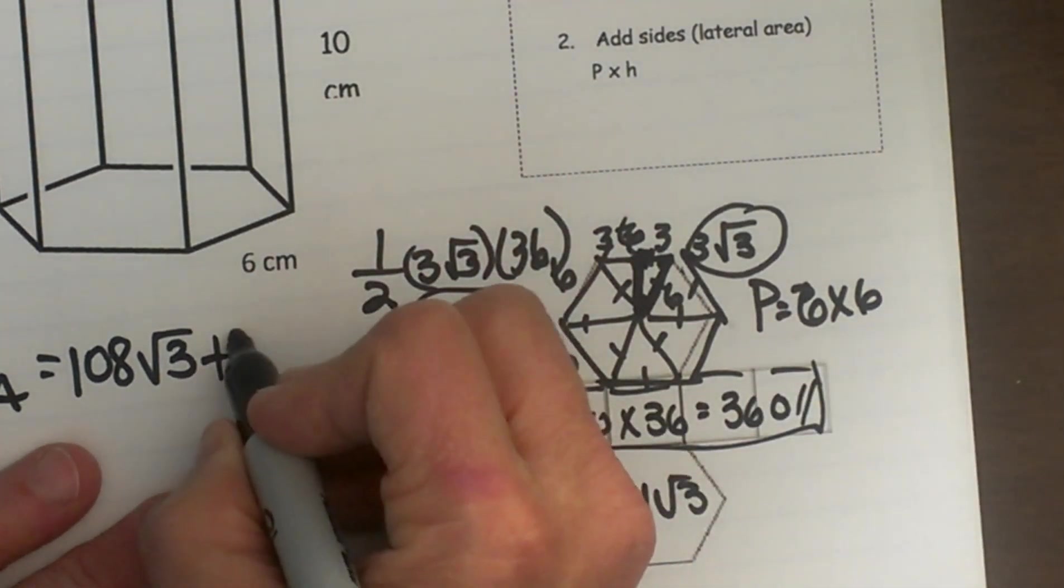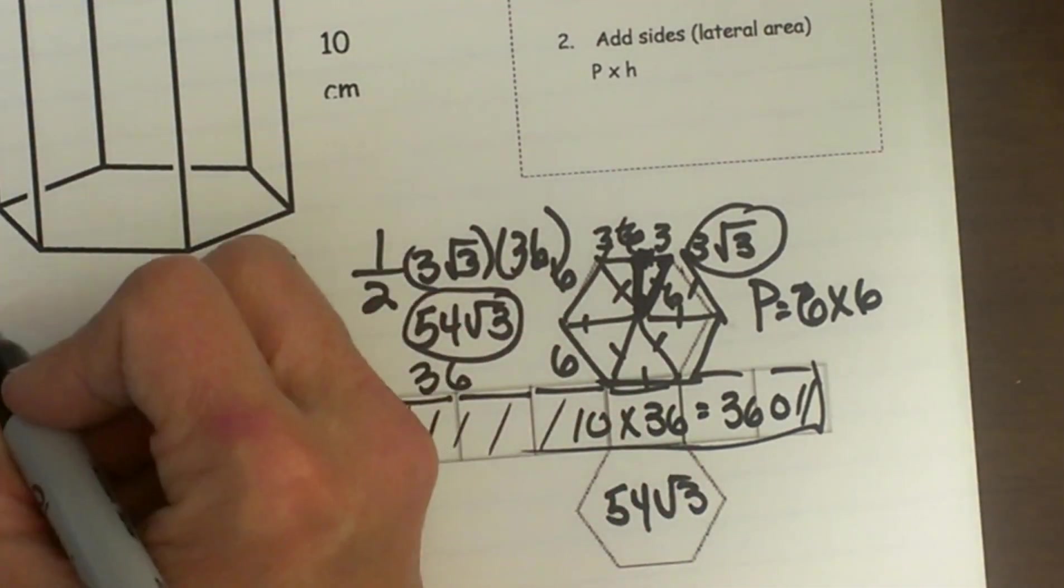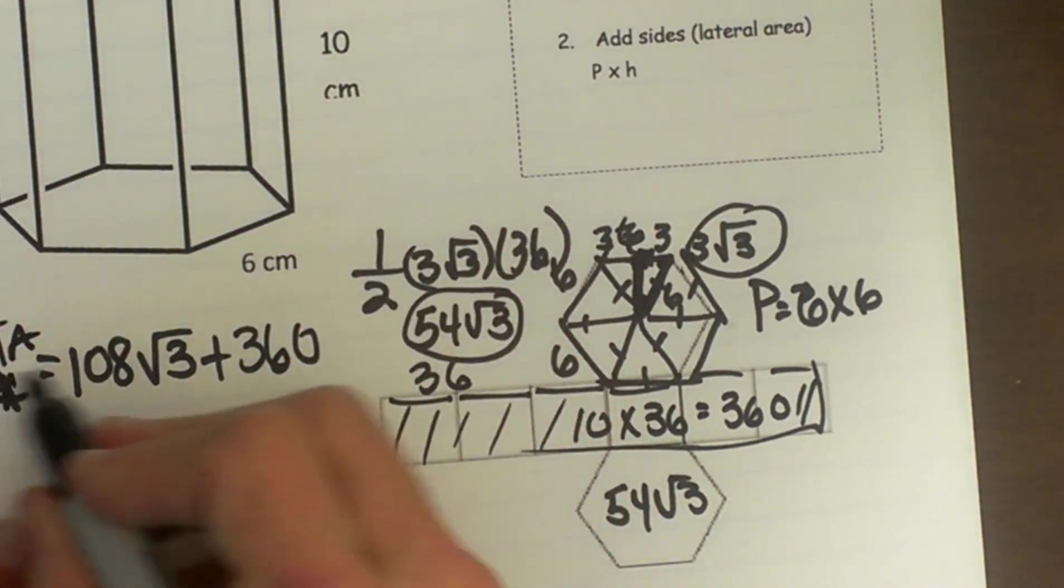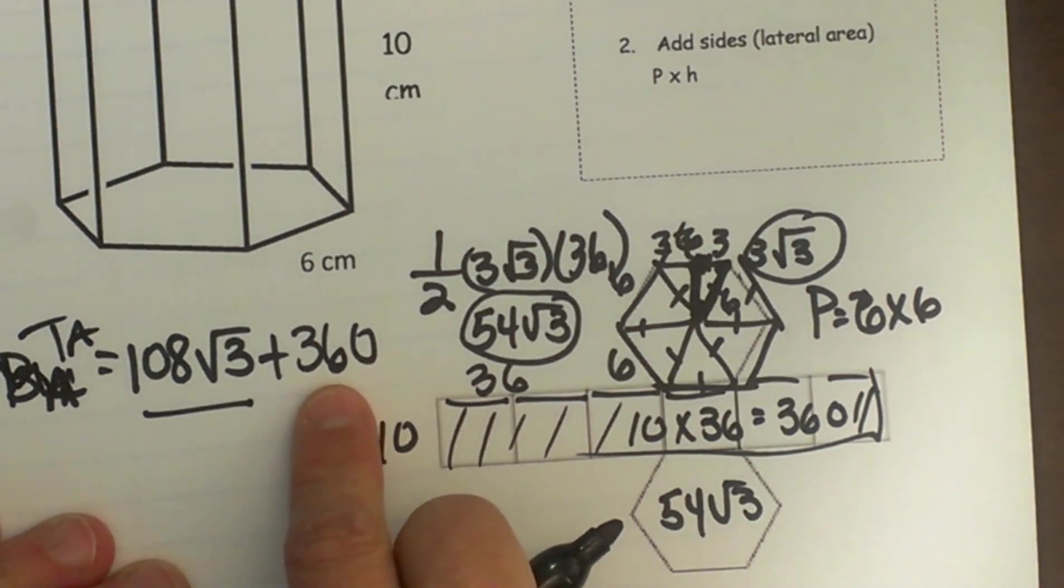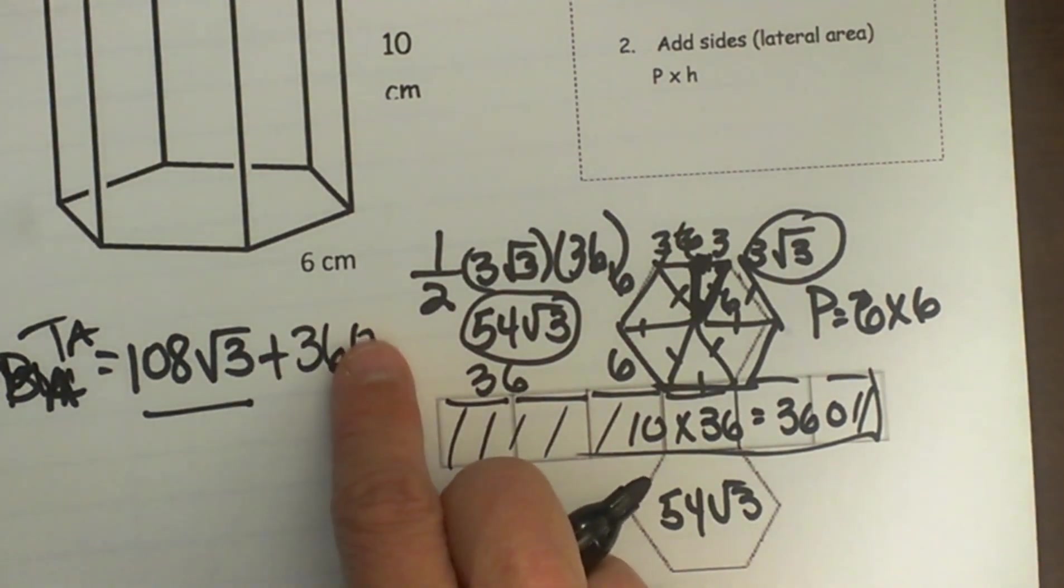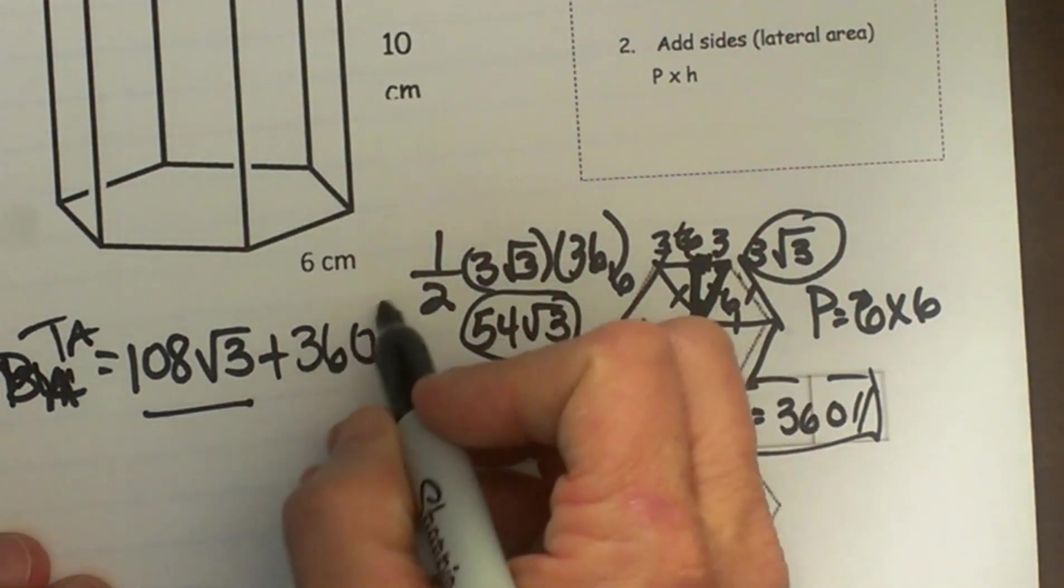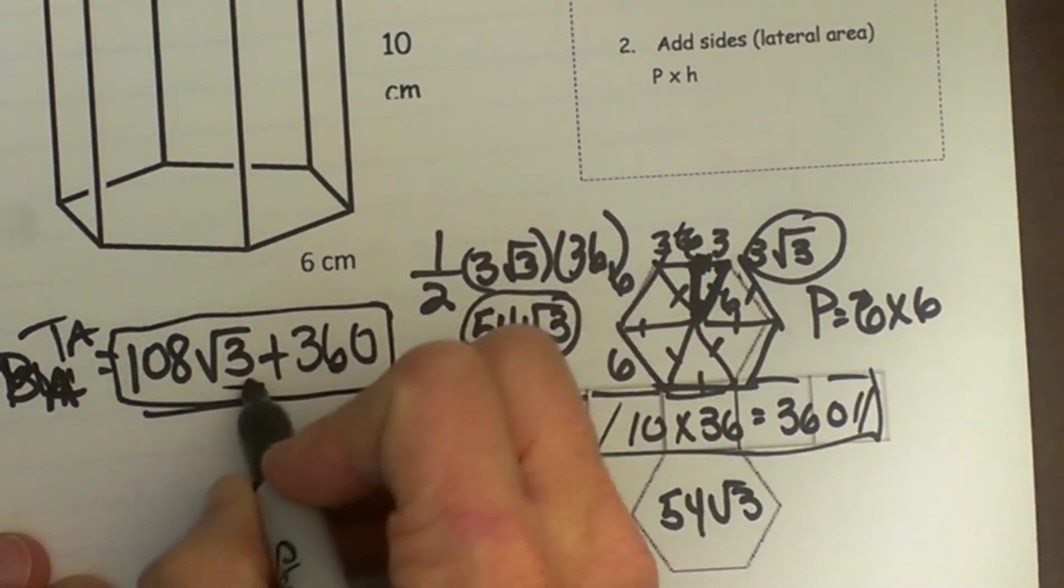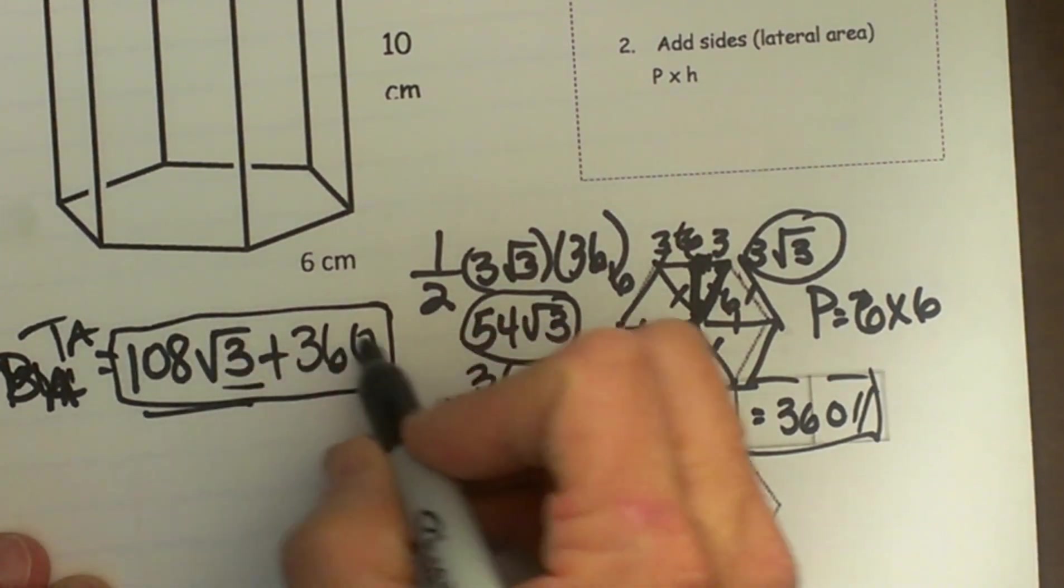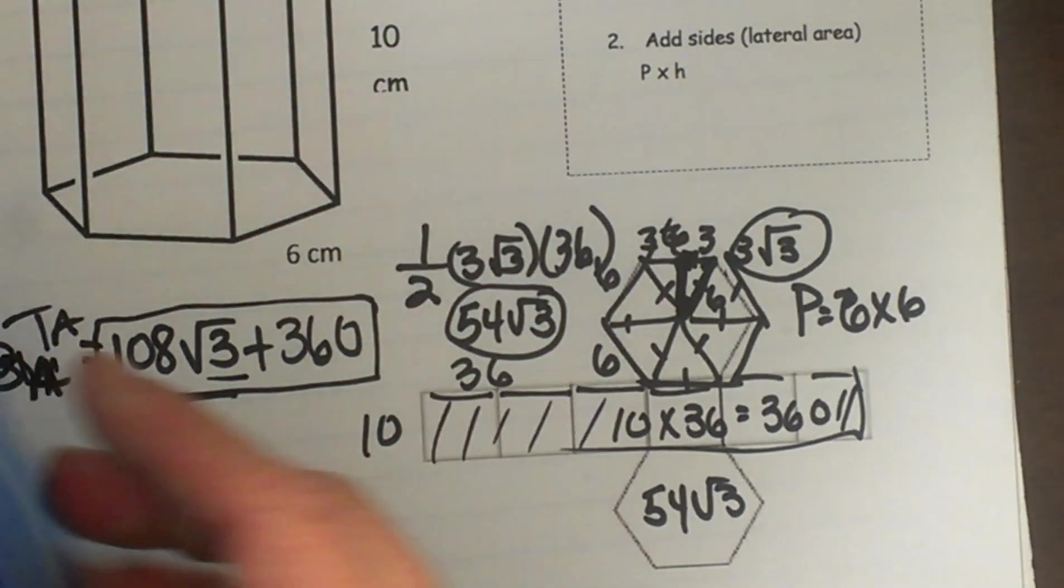And we are going to add that to our base area for our total area. Our total area would be the base area which is 108 square root of 3 plus our lateral area which is 360. And that is how you write your answer because you can't combine a number with a radical with a whole number. So you can leave it like this or you can convert it into a decimal.